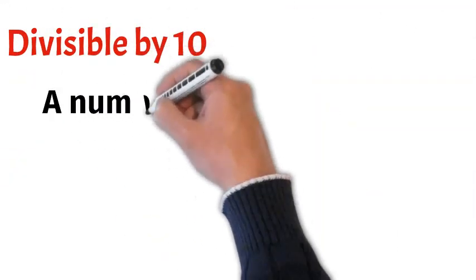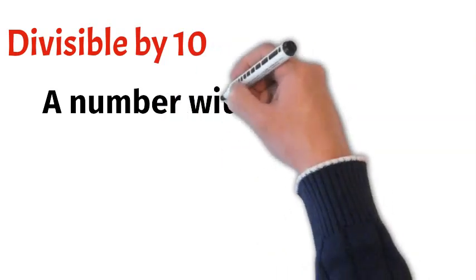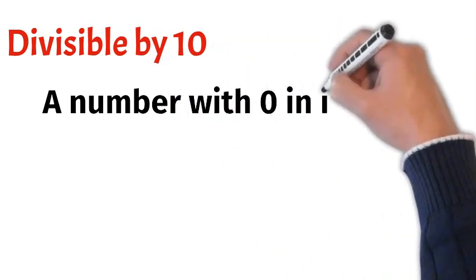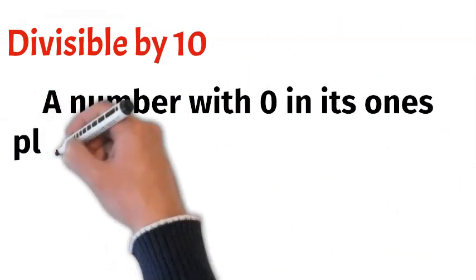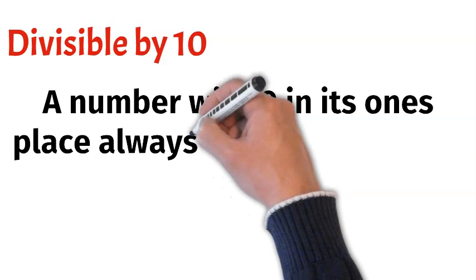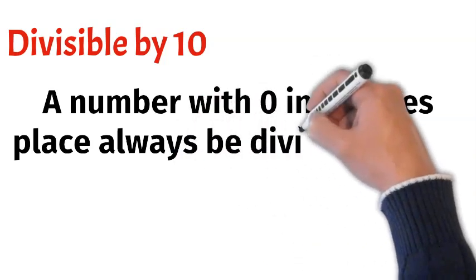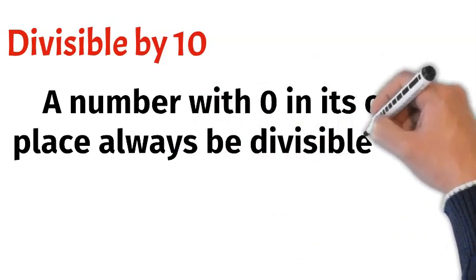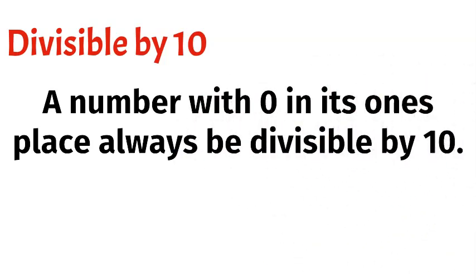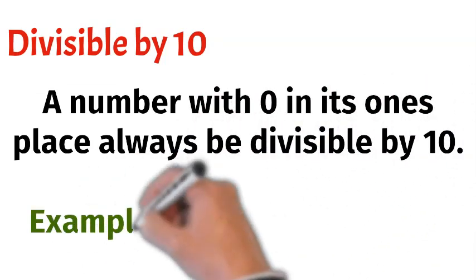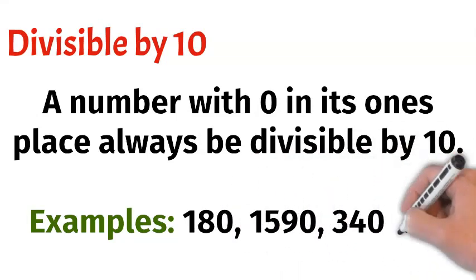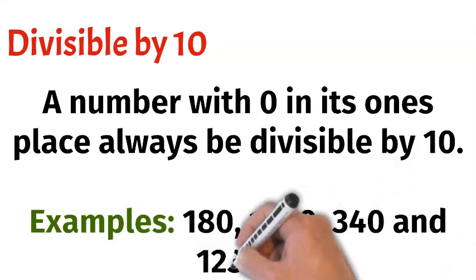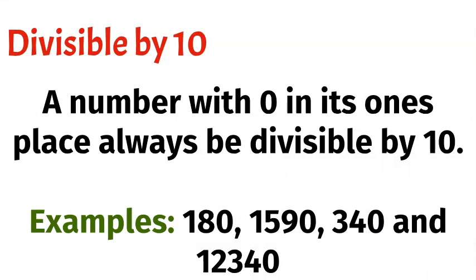Divisible by 10. A number with 0 in its 1's place is always divisible by 10. For example, 180, 1590, 340 and 12,340.